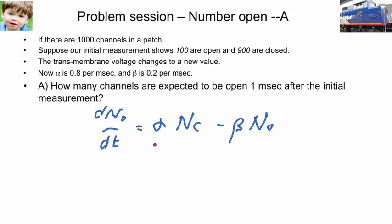So alpha, we know that's 0.8. Beta, we know that's 0.2.